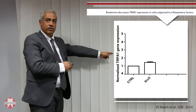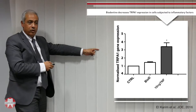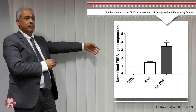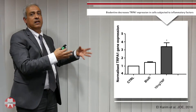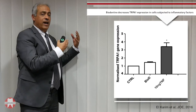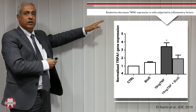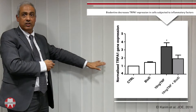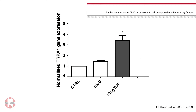When Biodentine alone is applied to healthy cells, there is no increase or decrease in receptor expression. However, with TNF-alpha there is a high increase indicating inflammation. Importantly, when Biodentine extract is added to the already-inflamed cells, there is a significant decrease in receptor expression. This means Biodentine decreases TRP receptor expression in inflamed cells.